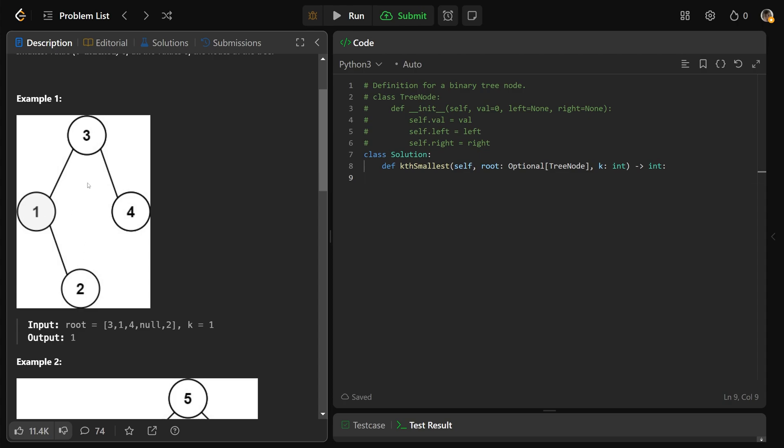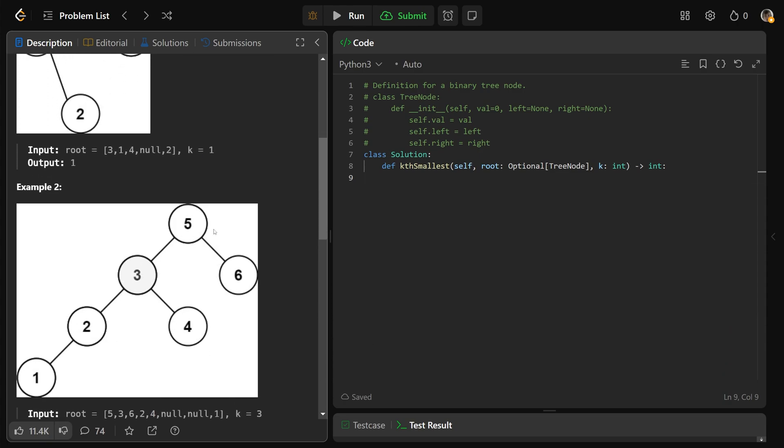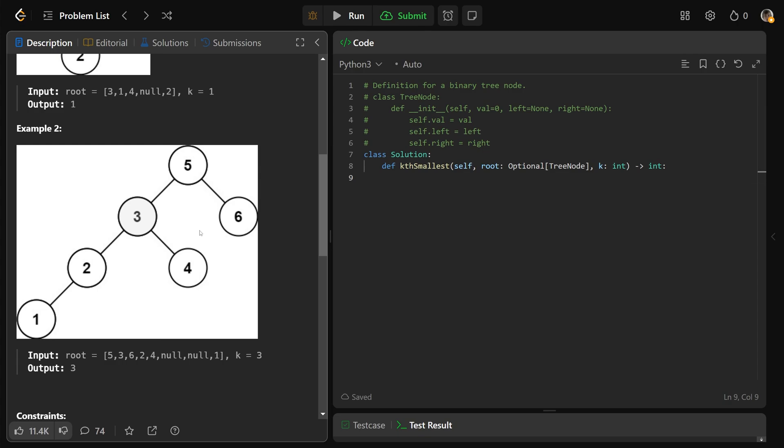Well, 1, 2, 3, and 4 is the order. If k is equal to 1, that means the very smallest element, which is just the 1. If we go down here, we're going to see a different binary search tree. If k is equal to 3, we want the third smallest element, and that is going to be 3. So we just return that node's value.